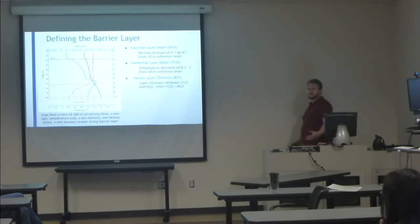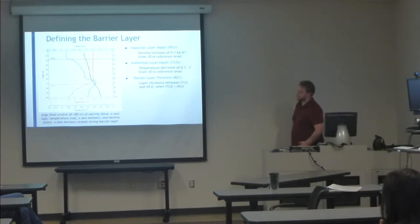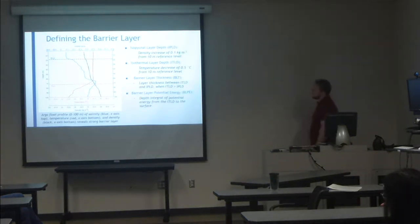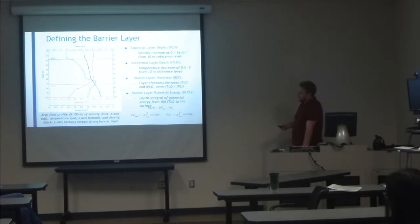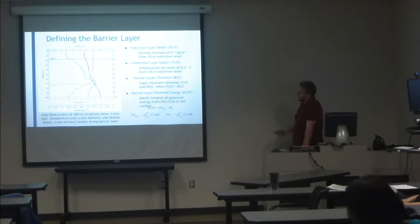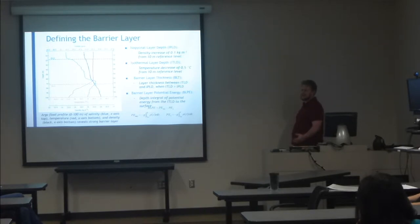Most studies define barrier layer strength based upon this thickness, and 50 meters is a huge barrier layer. But the thickness doesn't tell you anything about what the density is doing in between the layers. Some studies have looked at using barrier layer potential energy (BLPE) as a way to quantify stratification due to salinity and also limit the temperature. It's a depth integral of the potential energy from the isothermal layer to the surface. You subtract PE-mix, which is the integral using a constant density averaged over the isothermal layer to the surface, then integrate. Essentially it's the amount of energy it takes to fully mix this layer.